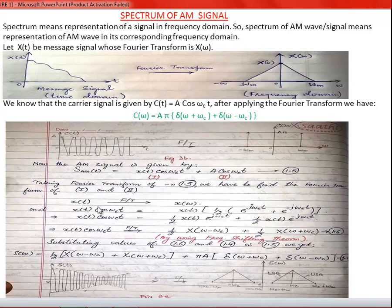For part 1, the Fourier transform of X(t) is X(ω). On multiplying by cos(ω_c·t), we apply the Euler identity: cos(ω_c·t) = 0.5·[e^(jω_c·t) + e^(−jω_c·t)]. Applying the Fourier transform individually to these parts using the frequency shifting theorem, we get 0.5·X(ω − ω_c) + 0.5·X(ω + ω_c).